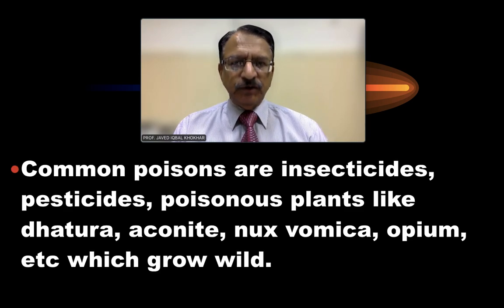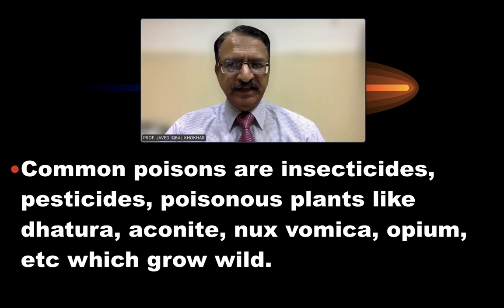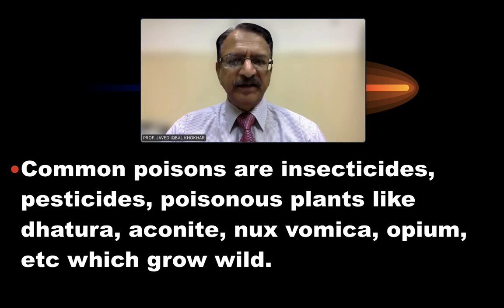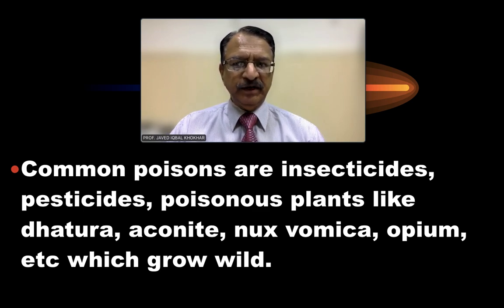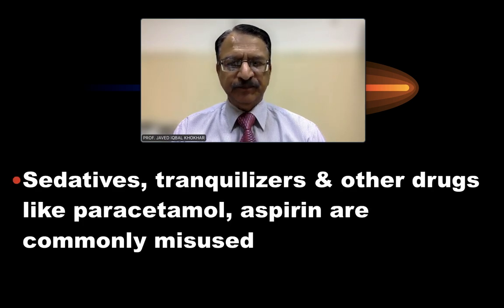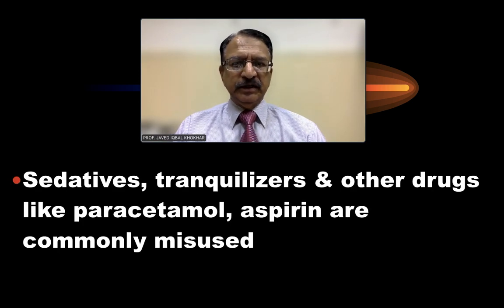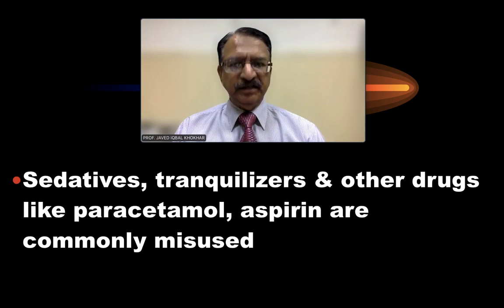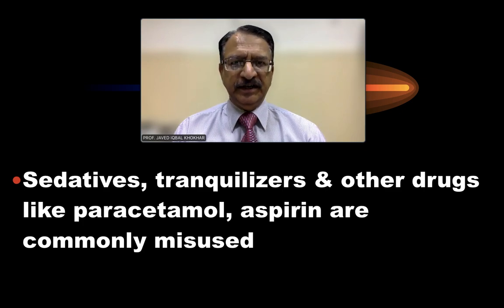The most common poisons detected are insecticides, pesticides, poisonous plants like toora, aconitine, nux vomica, opium, and other wild herbs. Sedatives, tranquilizers, and other drugs like paracetamol and aspirin are also commonly misused and detected.